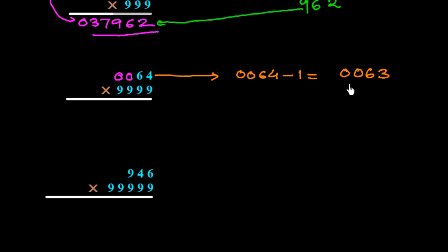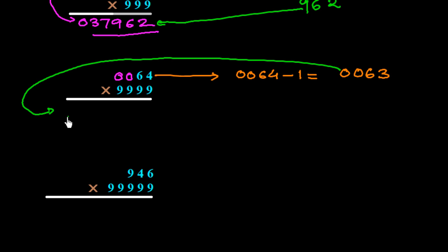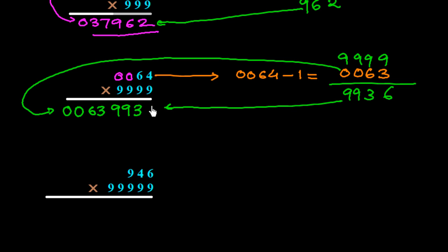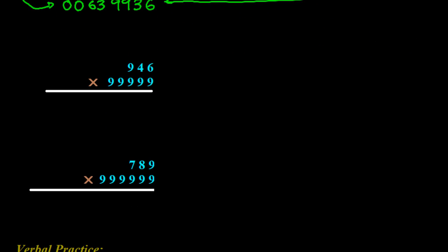We follow the same procedure: subtract 1 from 0064 to get 0063. Write 0063 on the left side, then subtract from 9999: 9 minus 3 is 6, 9 minus 6 is 3, 9 minus 0 is 9, 9 minus 0 is 9. The right side gives 9936, so the final answer is 63 9936.